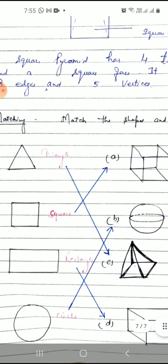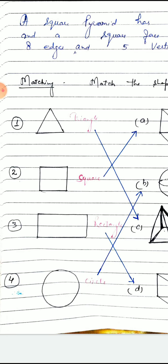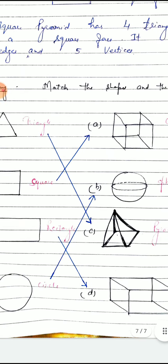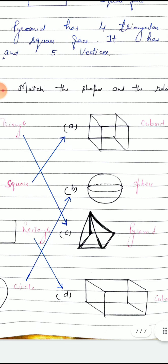Look at this. These 2D shapes are of triangle, square, rectangle, and circle. And 3D shapes are of cube, sphere, pyramid, and cuboid.